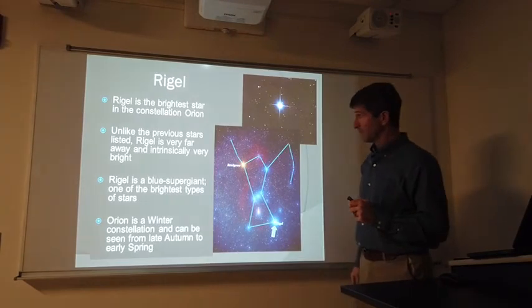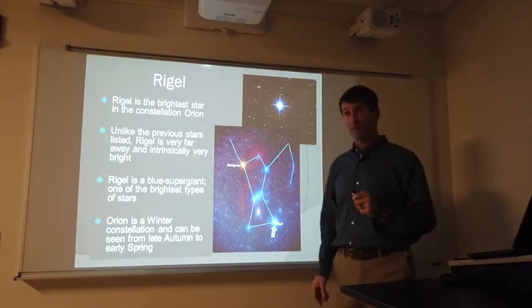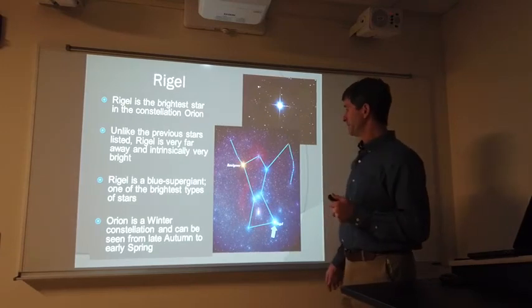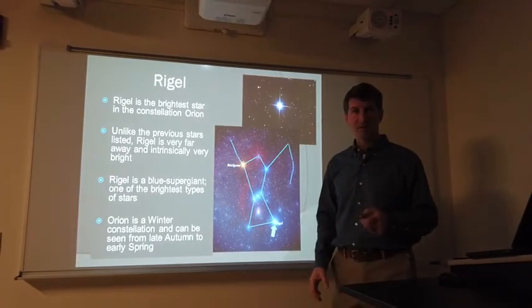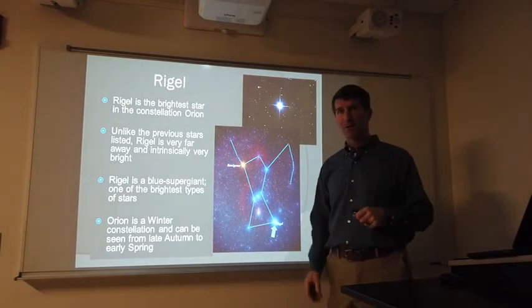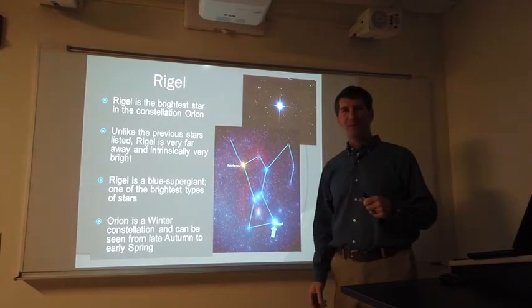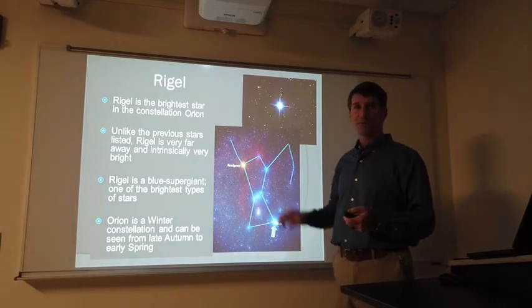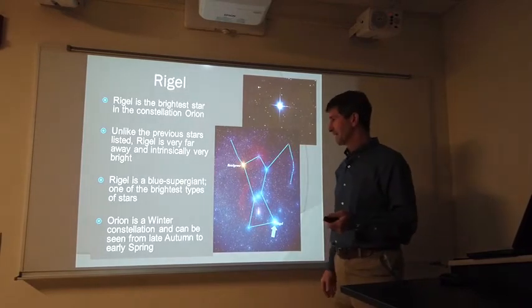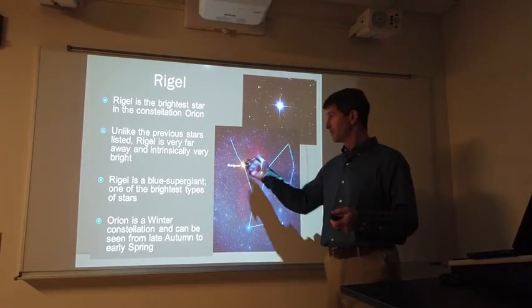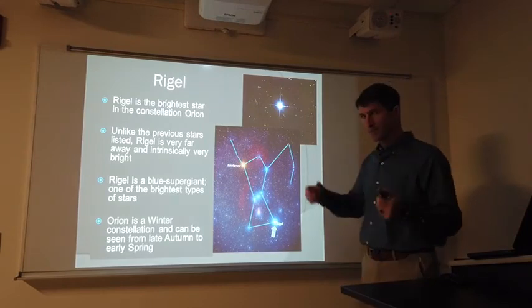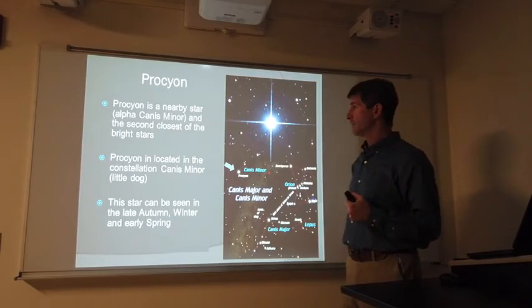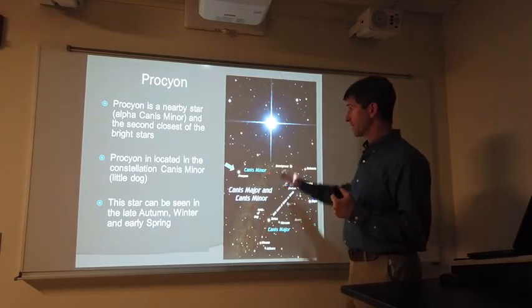And, of course, Rigel is the brightest star in the constellation. Betelgeuse actually is getting dimmer as time goes by, but it's a long period variable. Some say, oh, it's going to blow up. It's going to go supernova. Probably not. It's probably going to go supernova in the next 100,000 years, but don't hold your breath. That's a long time. It could blow up tomorrow. It could blow up in 100,000 years. It's going through periodic changes. Procyon, another nearby star like Sirius.